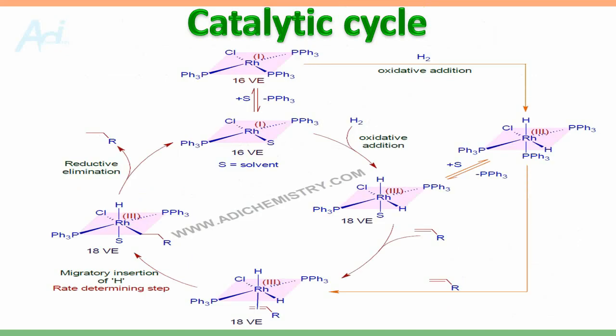This is the complete catalytic cycle. The topmost molecule in the middle is Wilkinson's catalyst — actually, the pre-catalyst. It loses a Tri-Phenyl Phosphine ligand to generate the active form. This active form of catalyst undergoes oxidative addition with hydrogen, followed by binding of an olefin molecule and migratory insertion of hydrogen, and finally reductive elimination to generate an alkane molecule.